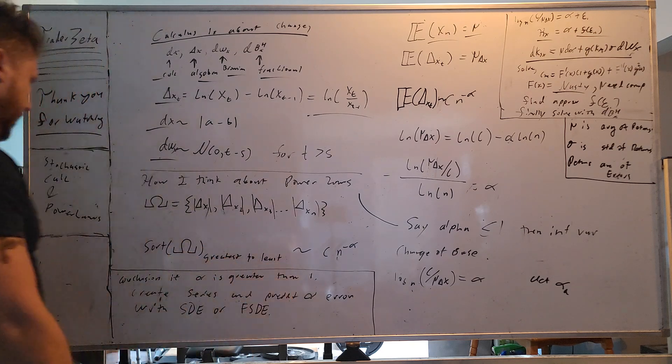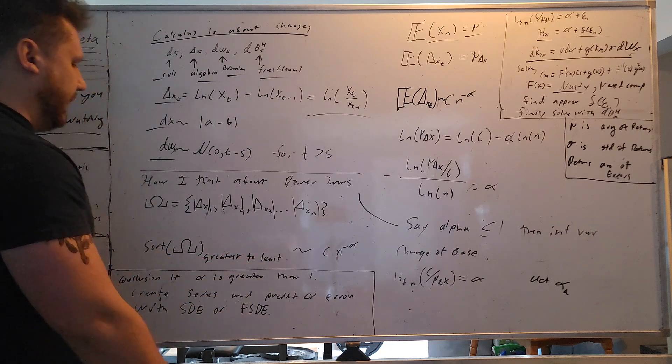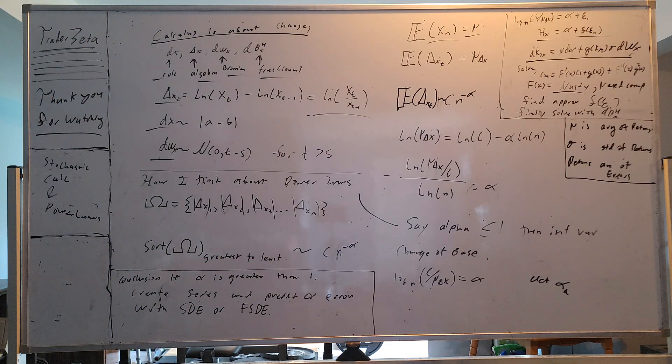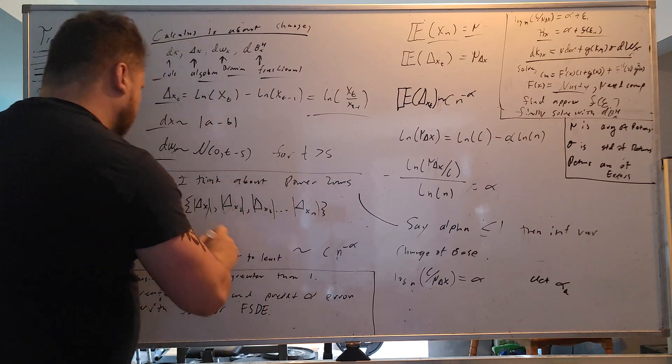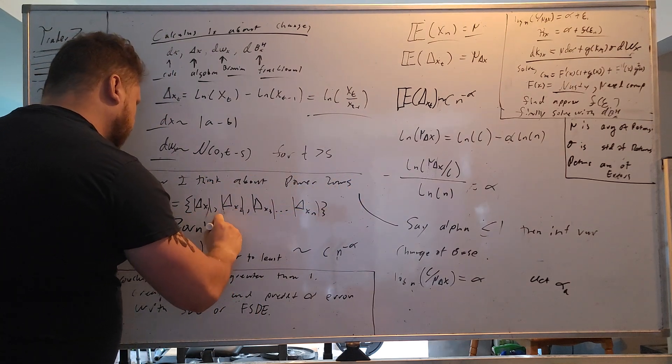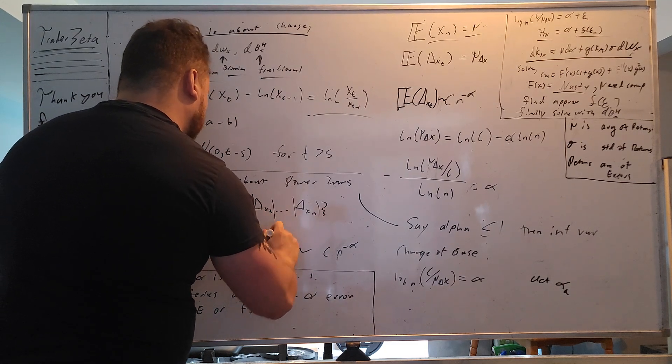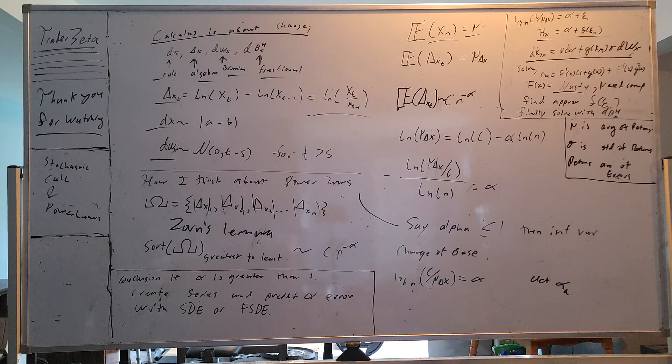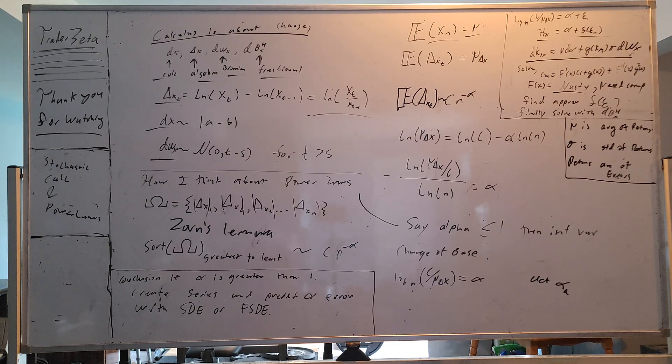Conclusion: if alpha is greater than one, create series and predict alpha error with SDE or fractional stochastic differential equation. I like this idea. If anybody's particularly interested in this part, look up something called Zorn's lemma. Hopefully you enjoyed the video. Like, share, subscribe, comment, all that good stuff. The next video will probably be on the Riemann hypothesis. See you there.